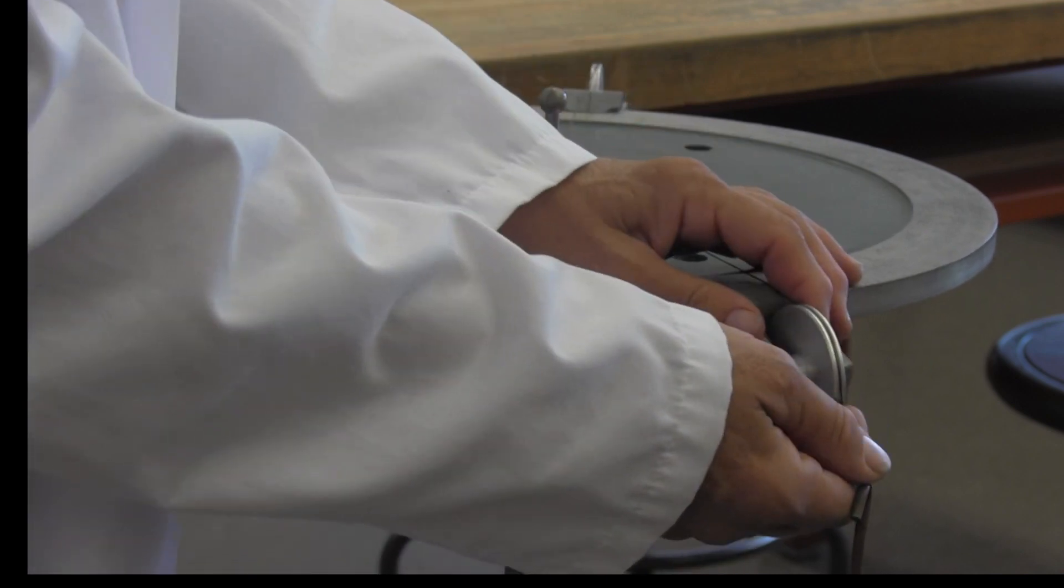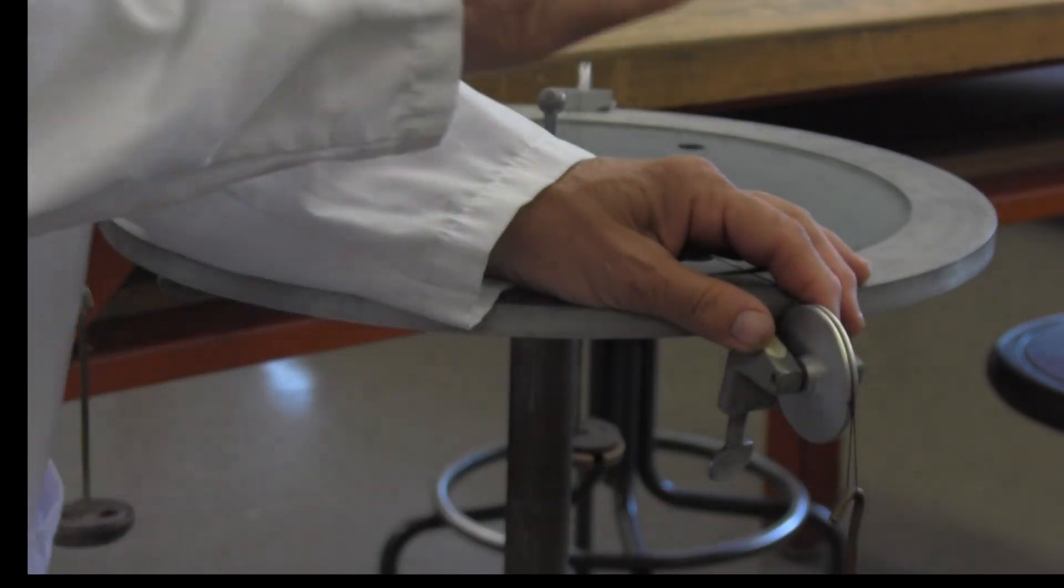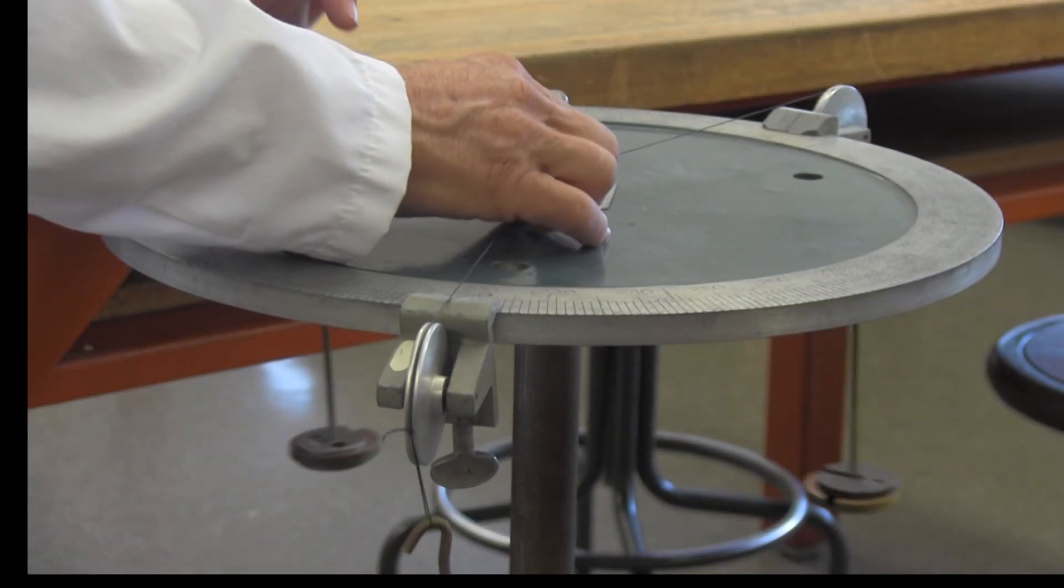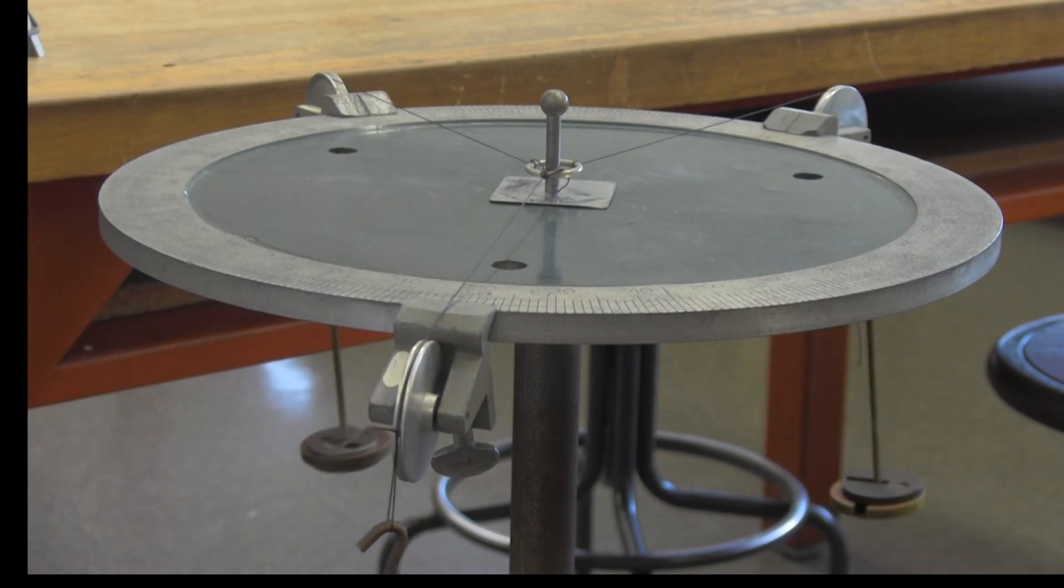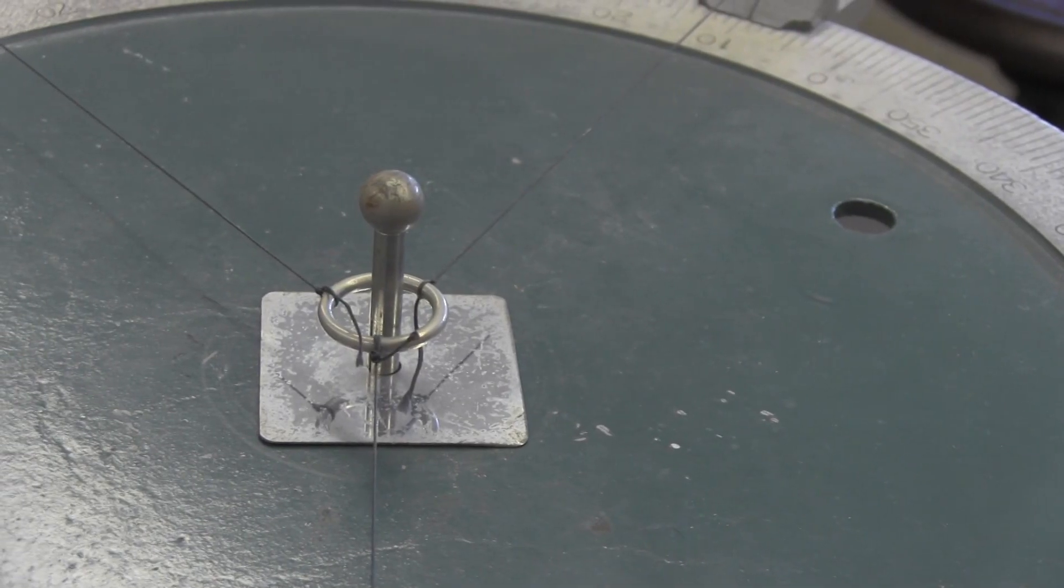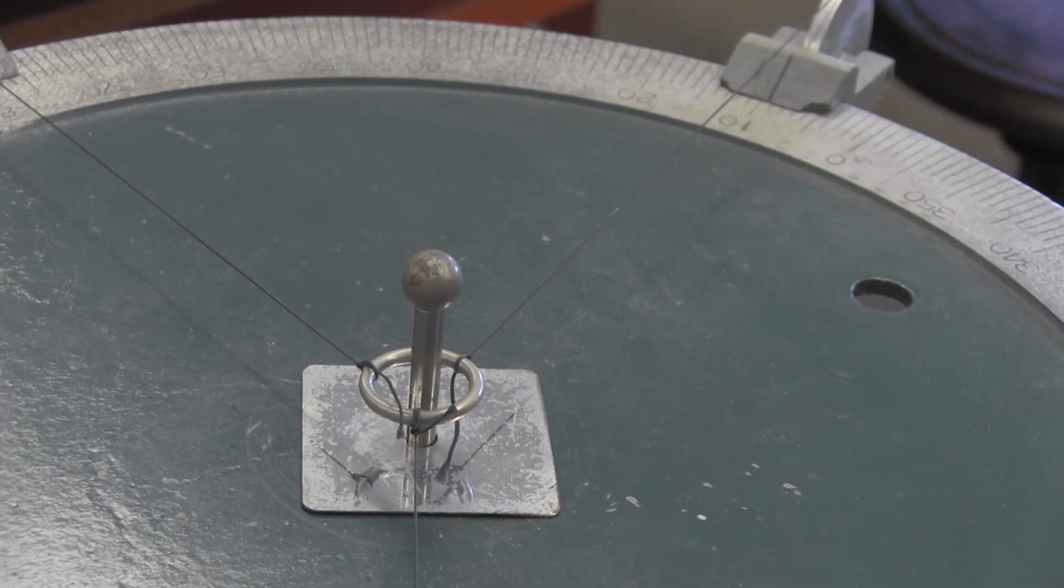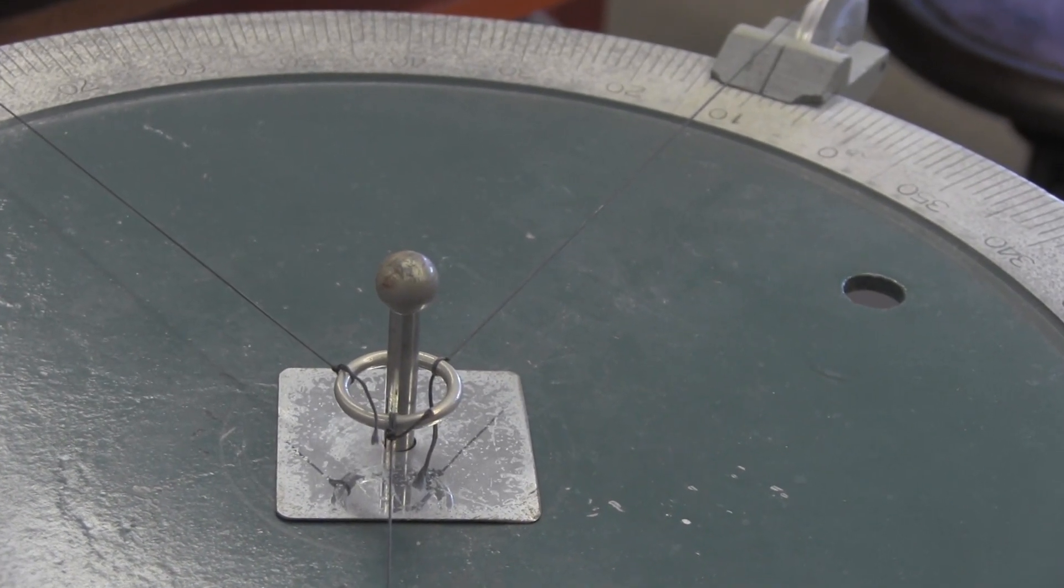I'm going to put some weights on here and I'll get my forces balanced so that this ring is not pulling against the pin in any manner. Now you can see that the ring is suspended and it's not pulling on the pin. Now it's time to interpret the data.